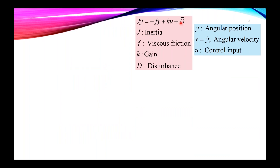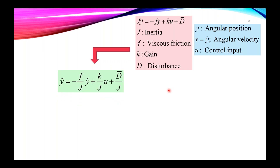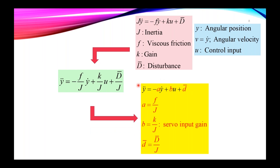We consider a second-order model of a servo, where y corresponds to the position of the servo, v to the velocity, u to the control signal, J to the inertia of the servo and the load, f to the viscous friction, k to the gain which is also a function of the amplifier driving the motor, and capital D-bar to the disturbance. We modify this equation by dividing by J to obtain parameters A, which is a function of viscous friction, and B, which corresponds to the servo input gain, along with the disturbance.